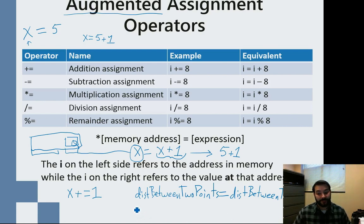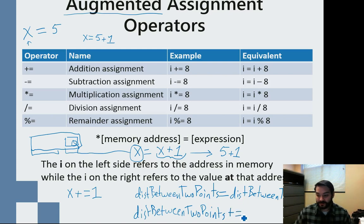Or I can go the opposite route. I can do it one more time. Dist between two points and using the augmented assignment operator plus equal 1 shortcuts how much I actually have to type.